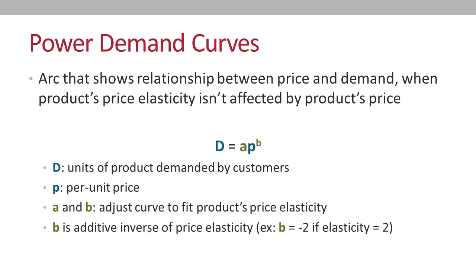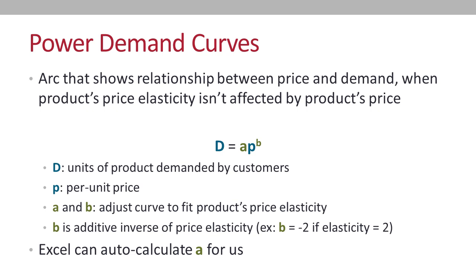The generic exponential formula for a power demand curve uses D for demand and P for unit price. A and B adjust the curve to match the product's price elasticity, but there's a slight twist for B: it's actually the additive inverse of the product's price elasticity. So if a product's elasticity is 2, B would have a value of negative 2. Again, we're going to let Excel handle the calculation of A for us.